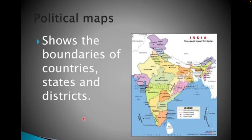The first is the political map. Political maps show different states and boundaries of different countries. This is India's political map — you can see the state of Jammu and Kashmir, then Himachal Pradesh, Punjab, Haryana, and Rajasthan. These are the proper different state boundaries. This is the whole political map, and the same applies to the world political map as well.